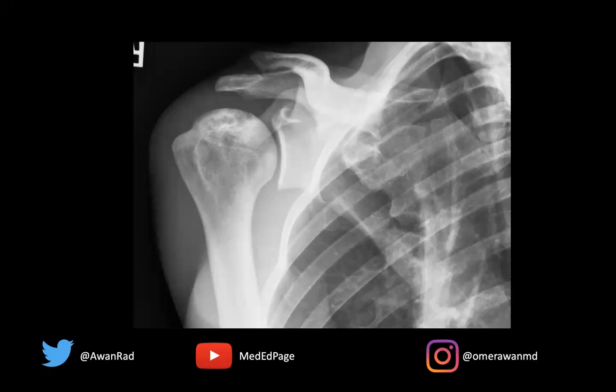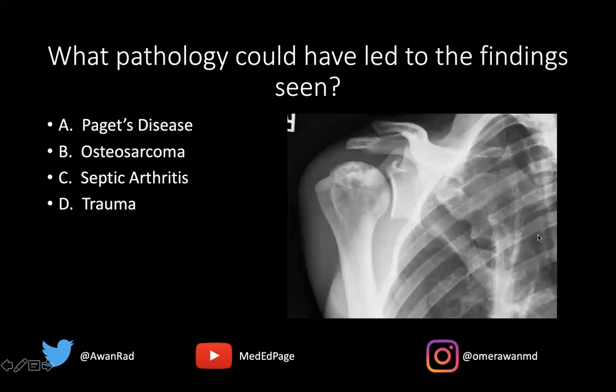Hello everyone, and welcome to MSK Unknown Case Series, case number 51. Here we have a frontal view of the right shoulder, and the question is: what pathology could have led to the finding seen? Is it Paget's disease, osteosarcoma, septic arthritis, or trauma?